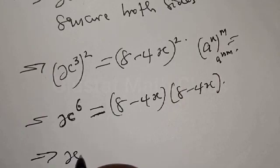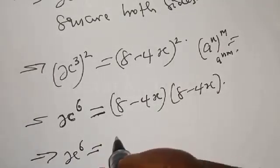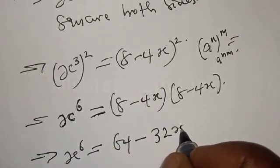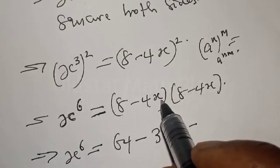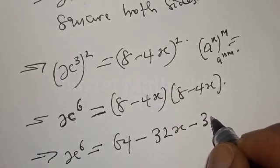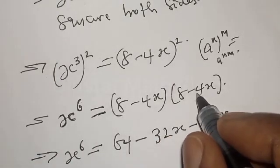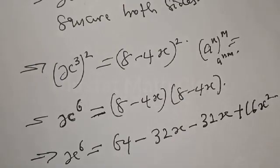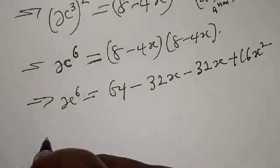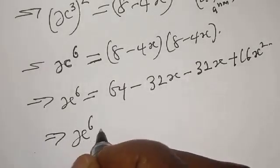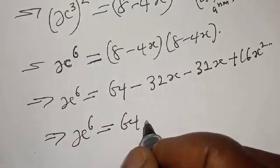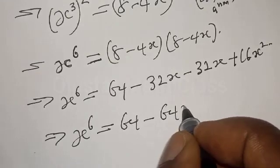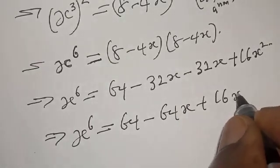This implies that we have x raised to power 6 equal to 8 times 8, that is 64. Then 8 times minus 4s is minus 32s, minus 4s times 8 is minus 32s, and minus 4s times minus 4s gives plus 16s squared. This implies x raised to power 6 equals 64 minus 32s minus 32s plus 16s squared, which is 64 minus 64s plus 16s squared.